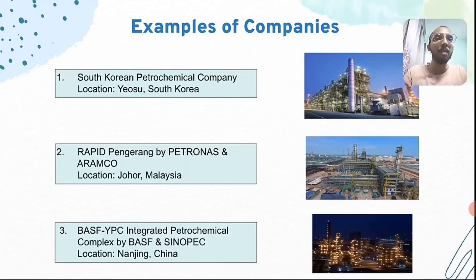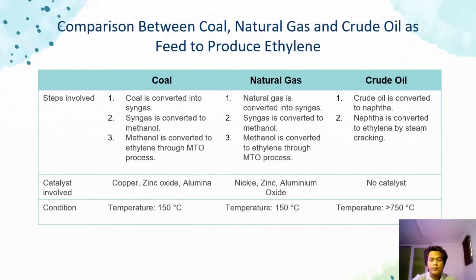These are some of the companies using this process to produce ethylene. The comparison between coal, natural gas, and crude oil as feed to produce ethylene is mainly focused on steps involved, catalysts, and conditions. For coal and natural gas, the process involves 3 steps, but for crude oil only 2 steps.